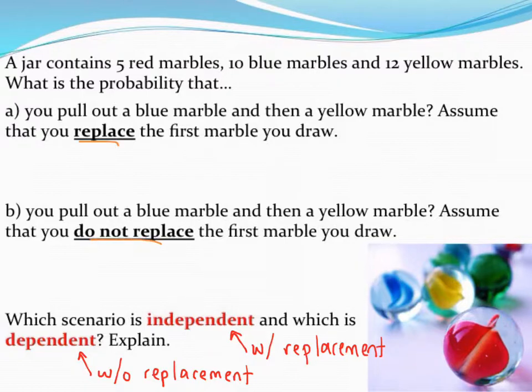When we do replace the marble, this is an example of an independent event. Because we've replaced it, each time we draw the marble, nothing has changed, so our probabilities have not changed each time.